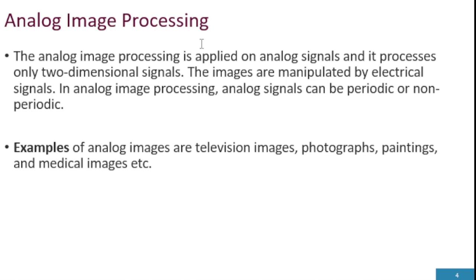Analog image processing is applied on analog signals and it processes only two-dimensional signals. The images are manipulated by electrical signals. Analog signals can be periodic or non-periodic. Examples of analog image processing are television images, photographs, paintings, and medical images, which are all processed and manipulated as analog images.